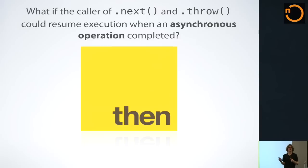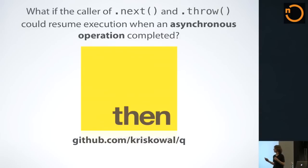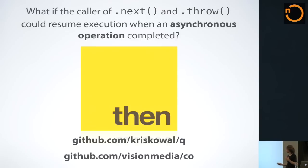What if the caller of next and throw could resume execution when an asynchronous function completed? Promises. The point is that promises are just one pattern for facilitating asynchronous programming. I picked them as an example because a promise is meant to make asynchronous code parallel the synchronous variant. A synchronous function can do one of two things: it can either return a value or it can throw an exception. And as you saw with generators, we can either pass back values to the parent generator function or we can have it throw an exception at that current position.